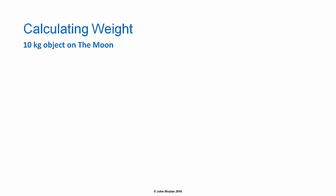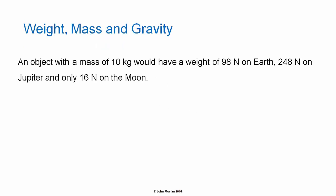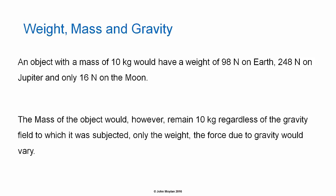For the same object on the surface of the Moon, we use the same formula F subscript g equals mg. Acceleration due to gravity on the surface of the Moon is 1.6 meters per second squared, meaning the object has a weight of 16 newtons. So a 10 kilogram object weighs 98 newtons on Earth, 248 newtons on Jupiter, and only 16 newtons on the Moon, while its mass remains 10 kilograms regardless of the gravitational field.